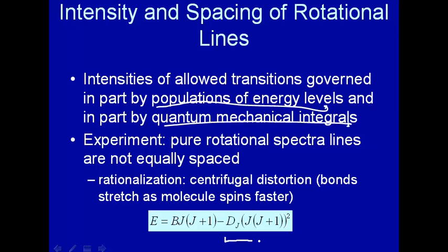And the way one takes into account centrifugal distortion is to add this additional term to energy. Here we have the spectroscopic constant B. And now here we have another spectroscopic constant. We'll call that DJ.